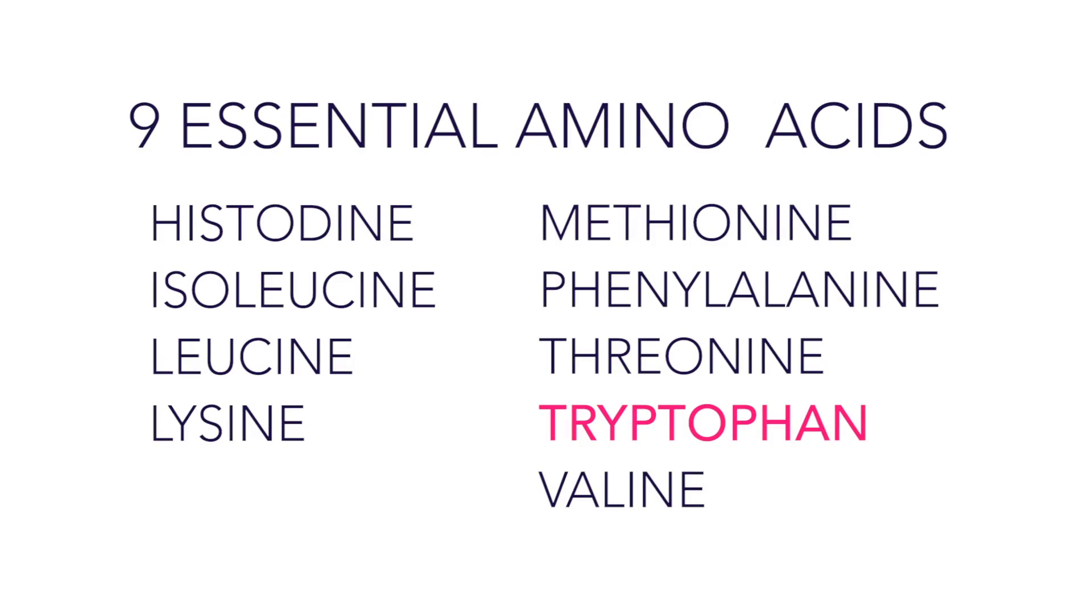So tryptophan is an amino acid. Amino acids are the building blocks of all of the proteins in our bodies and all the proteins in all living things on Earth. Tryptophan is one of what are called the nine essential amino acids. So these are amino acids that your body can't make from more simple building blocks, and you have to get it through your diet.